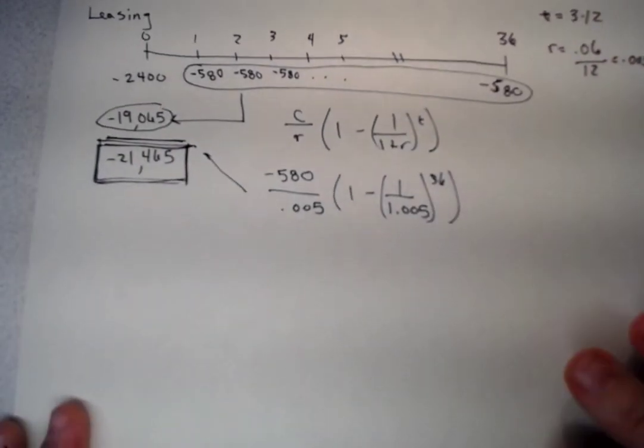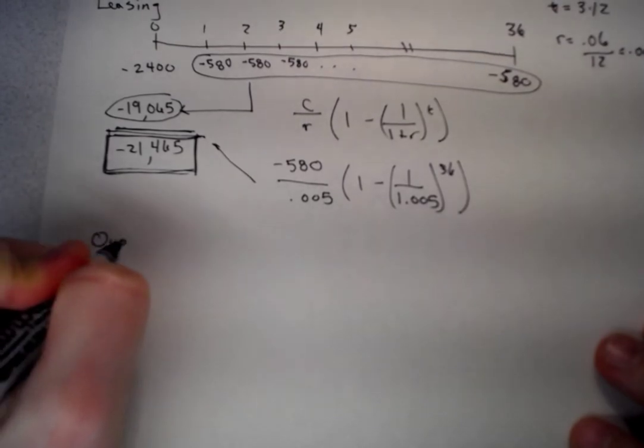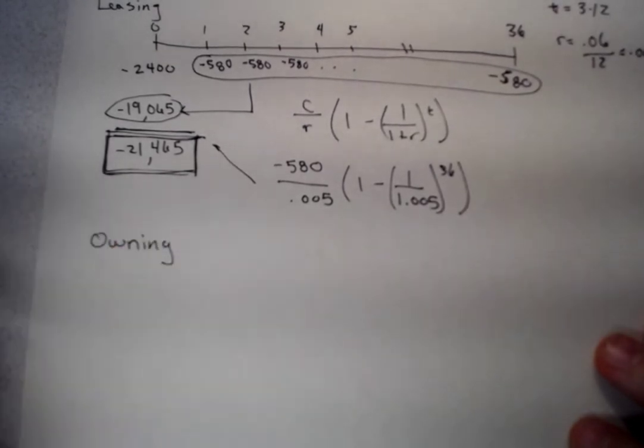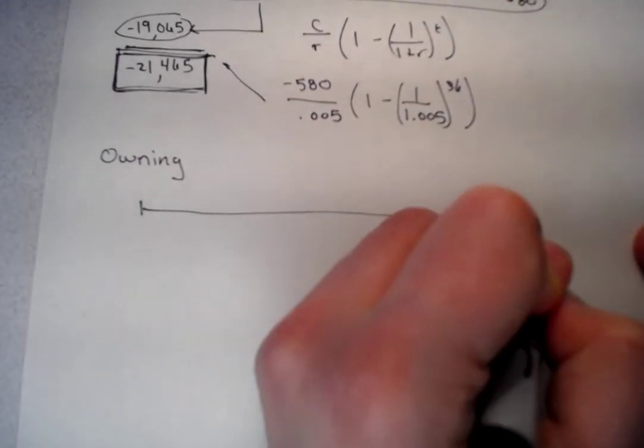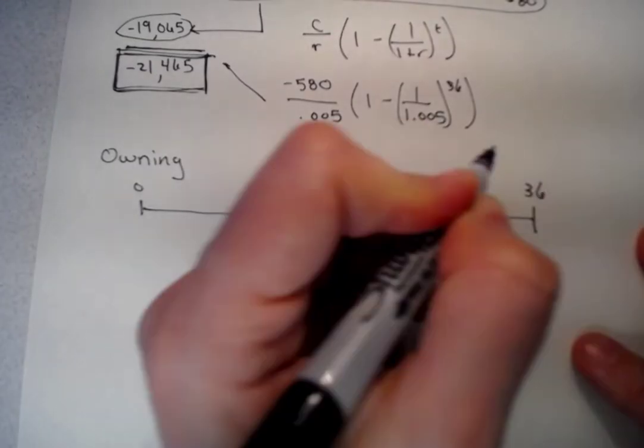This is what we want to pay attention to when we talk about owning the car. We're going to do the same thing, draw a timeline, 0 to 36.